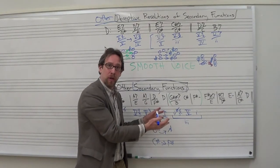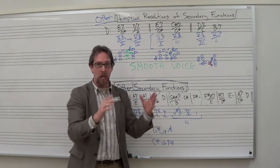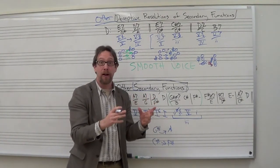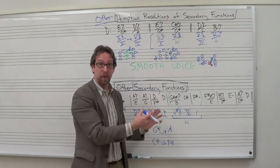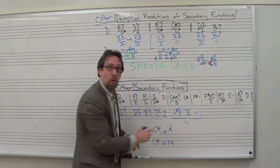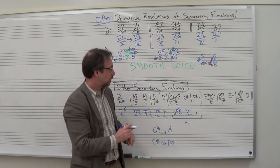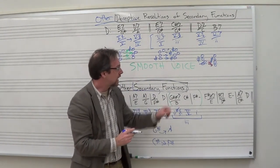So what we have now is a better analysis. And this is going to lead us into, again, the overlap or the gray area between secondary functions and modulation. This is very much getting into that. But this would be a more insightful, meaningful way to look at those chords. Let's keep going.